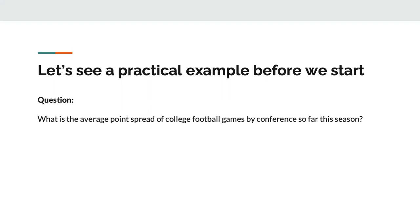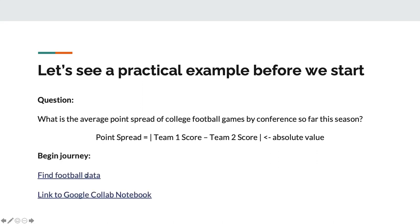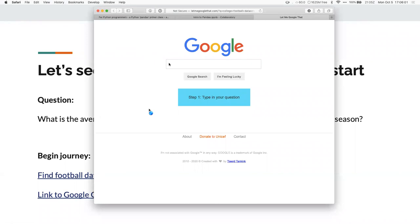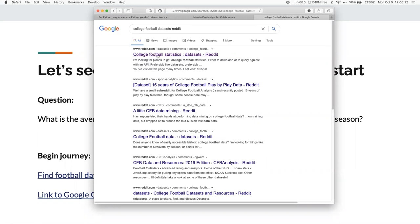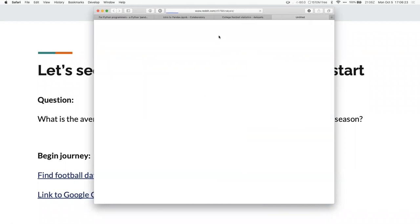Before we even start, let's work through a practical example. We're at the University of Alabama, so of course it's about football. The question is: what is the average point spread of college football games by conference so far this season? The point spread is defined as team one's score minus team two's score, taking the absolute value. We Google 'college football data sets' and find a subreddit devoted to college football analysis.